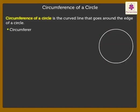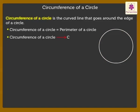It is also known as perimeter of a circle. We denote it by capital letter C.